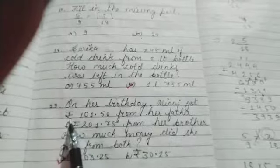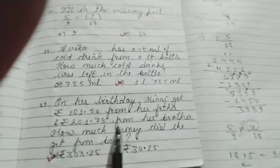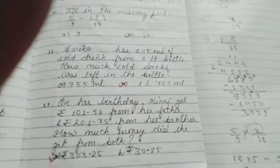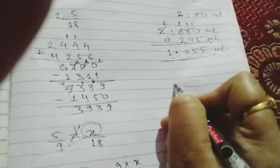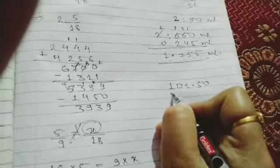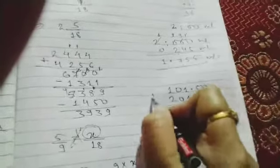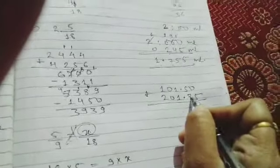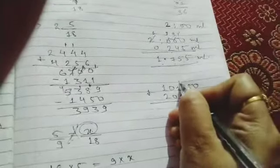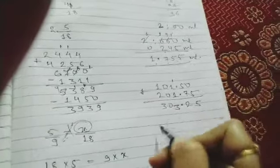On her birthday, Mini got rupees 101.50 from her father. Rupees 201.75 from her brother. How much money did she get from both? So we have to add this. So Mini got rupees 101.50 from her father. Now from her brother 201.75. Now we are going to add this up. 5. 7 and 5 is 12. 2 carry 1. Now 1, 2 and 3. 0 and 3 point is there. So 303.25 is our answer.